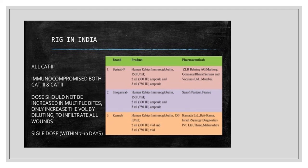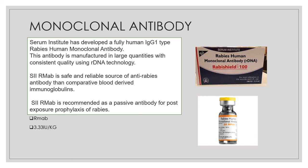Monoclonal antibodies are a newer, safer, and reliable alternative to blood-derived immunoglobulins for passive antibody in PEP. They are developed using recombinant DNA technology, have a very low reaction rate, and the dose is 3.33 international units per kg.